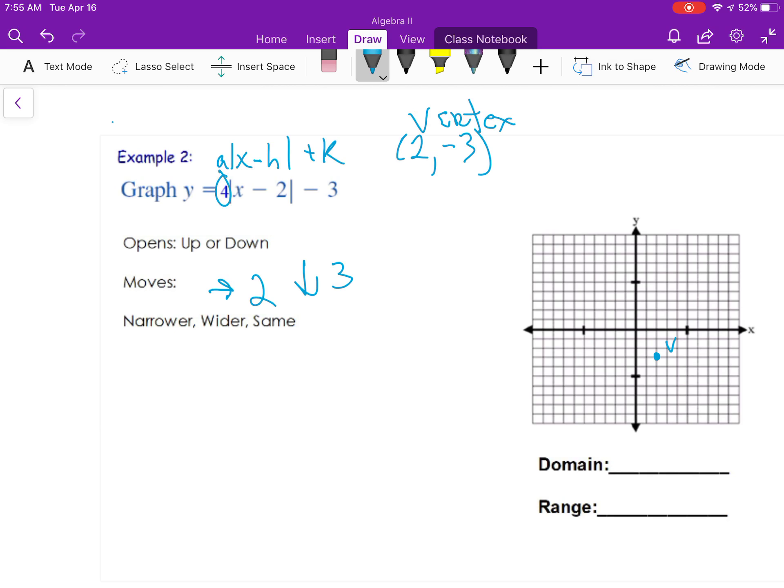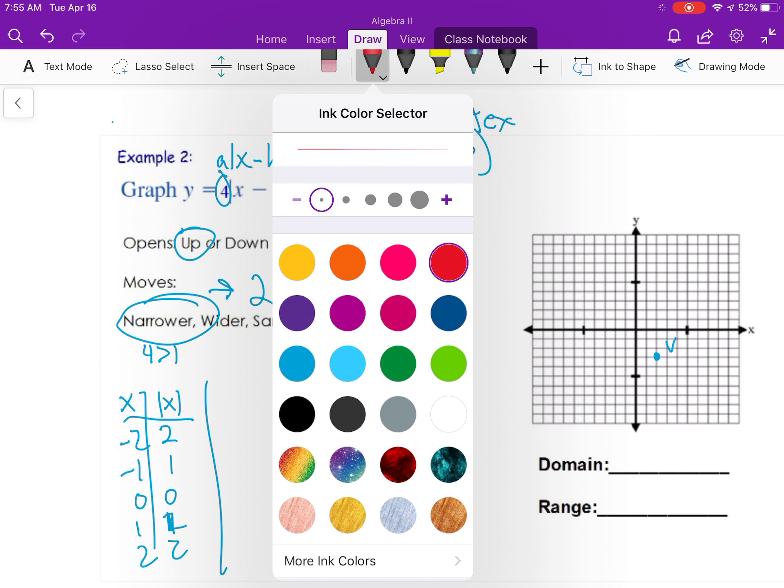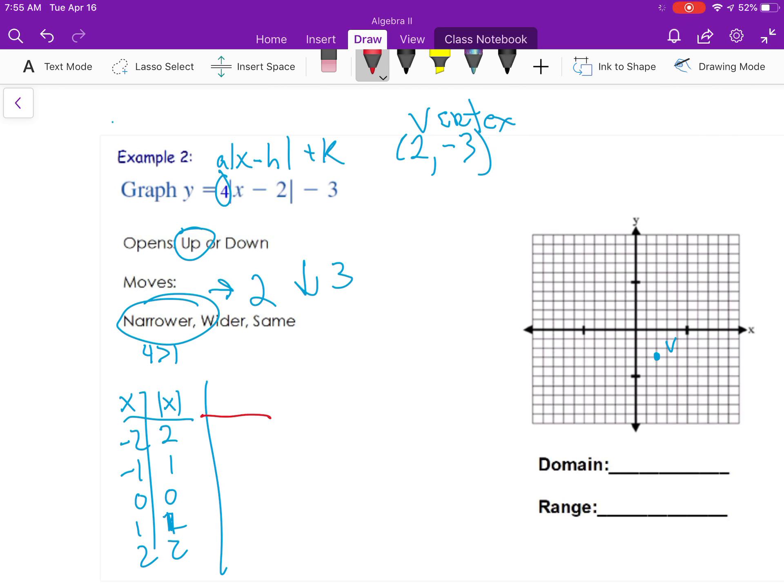And look at the a value of 4. It's positive, so it's going to open up. And because 4 is bigger than 1, it's going to be narrower, because here are my original absolute value numbers again. 2, 1, 0, 1, and 2. But now because a is 4, maybe I'll do that here in red, a different color. I'm going to go through, and I'm going to multiply all of those absolute value numbers by 4. So 8, 4, 0, 4, 8.